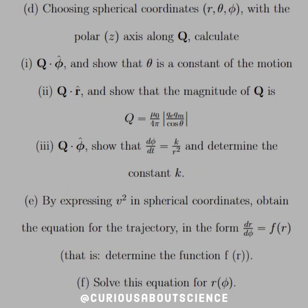Now page two. Choosing spherical coordinates R-theta-phi with the polar Z-axis along Q, calculate the following. Q-dot-phi-hat and show that theta is a constant of the motion. Q-dot-R-hat, and show that the magnitude of Q is mu-naught over 4pi, absolute value Qe Qm, divided by cosine theta. And Q-dot-theta-hat — show that d-phi/dt is equal to K over R-squared, and determine the constant K.